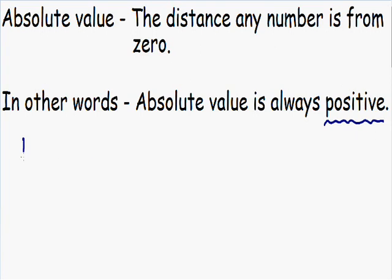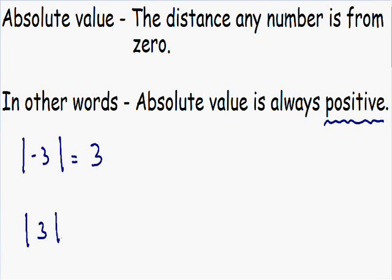So let's say we have the absolute value of negative 3. If you haven't figured it out, absolute value is written with the brackets around the number. We have the absolute value of negative 3, and we know that the absolute value is always going to be positive. So the absolute value of negative 3 is going to be positive 3. Now let's say we have the absolute value of positive 3. Once again, the absolute value is always positive, so the absolute value of positive 3 stays positive 3.